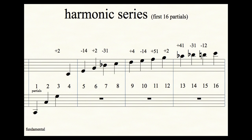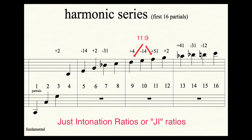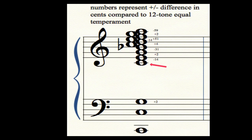Microtonalists use ratios to describe different types of intervals or interval sizes. We get the ratios directly from the harmonic series, and the numbers represent the proportion of the different frequencies of each pitch. They don't imply any specific notes, just the size of the interval. For example, if we take the fourth partial and play it against the fifth partial - in this case that's C to E, which is a major third - we get that slightly flat but solid sounding major third.